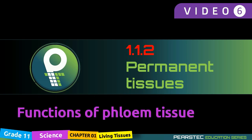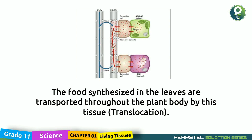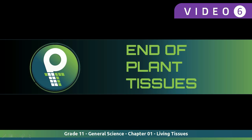Functions of the phloem tissue: the food synthesized in the leaves is transported throughout the plant body by this tissue. They call it translocation. So translocation happens through phloem tissues. This brings us to the end of the plant tissues. We understood the phloem and xylem tissue and the complex tissues. I'm going to meet you and talk about animal tissues in our next session. Till then, bye-bye, take care of yourself.